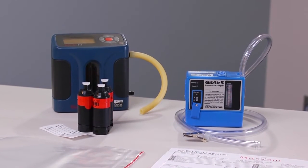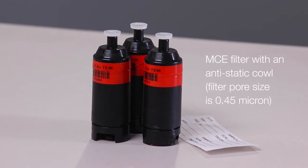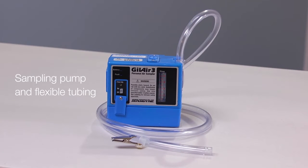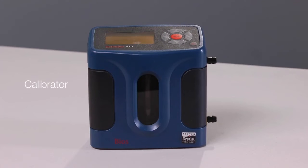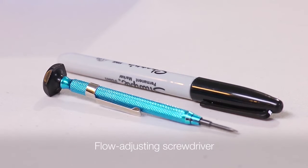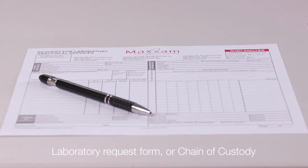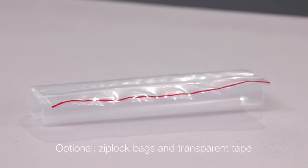If you plan to collect a TEM sample, you will need: MCE filter with an anti-static cowl, filter pore size 0.45 micron, sampling pump, flexible tubing, calibrator, flow-adjusting screwdriver, laboratory request form or chain of custody, and optionally, Ziploc bags and transparent tape.